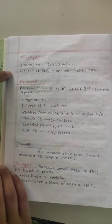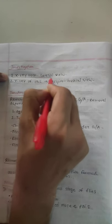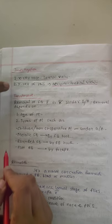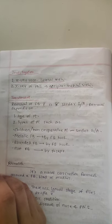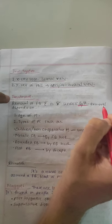Now the investigations. Number one is x-ray of the nose, lateral view. Number two is x-ray of the paranasal sinus, which is the occipital view. Now the treatment. What is the removal of the foreign body? With or without general anesthesia. Then it will be removed.